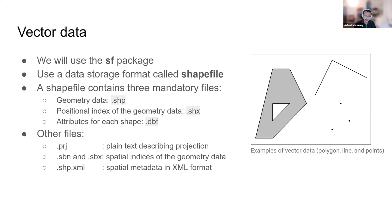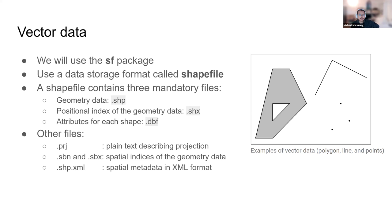For vector data, the main R package used is 'sf', which supersedes the 'sp' package. This package reads a data storage format called shapefile, which is actually not a single file but a directory containing at least three files.